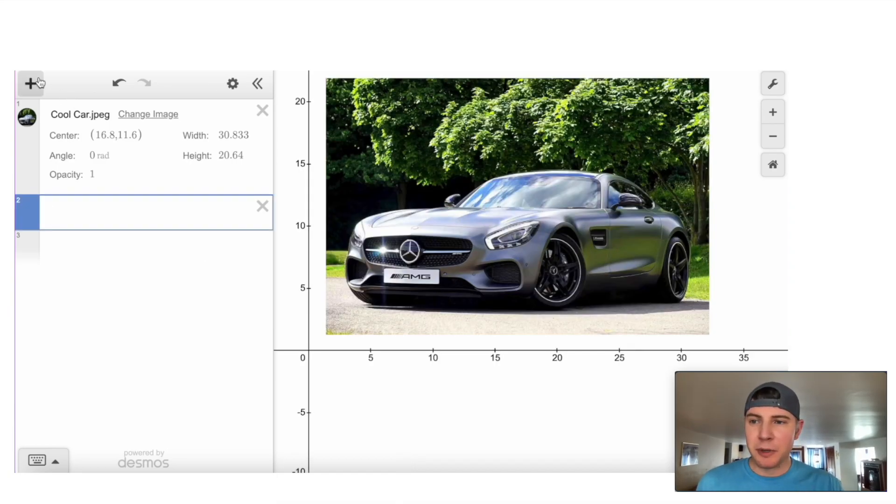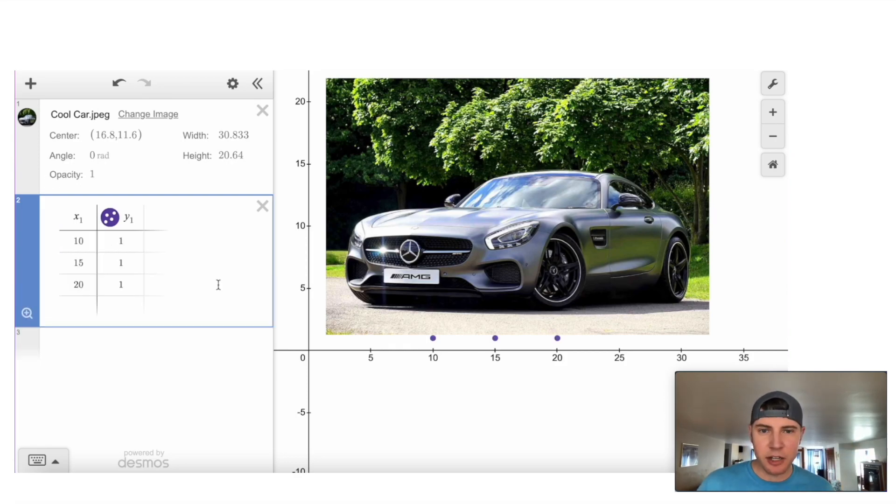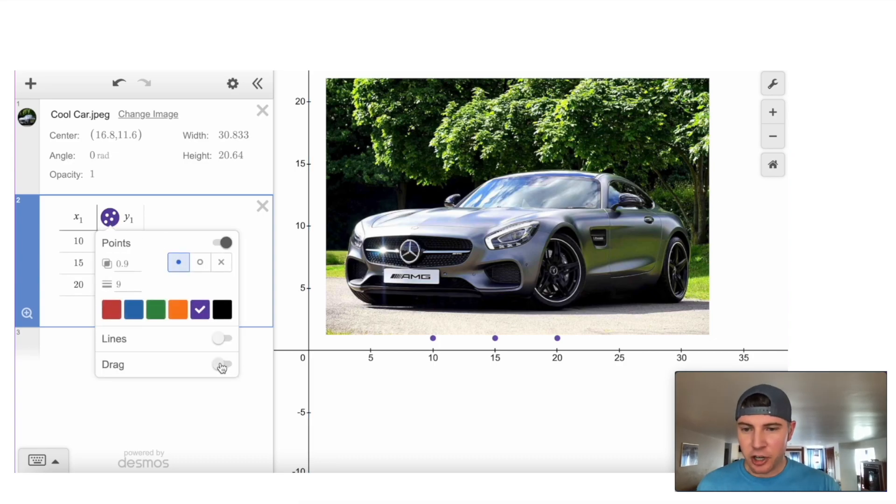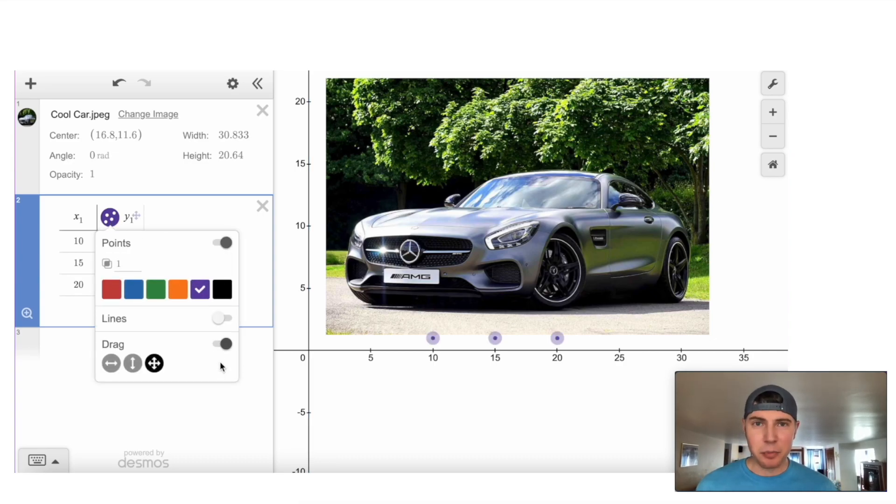So now to do this, we're going to use regression. Let's open a table. So you go to the plus here, click on table, and you want three points. Let's do 10, 1, 15, 1, and 21. So here are our three points. Now we want to be able to drag these points. You're going to click on the shift button and click on this purple circle and turn on drag. That enables us to drag the points around.